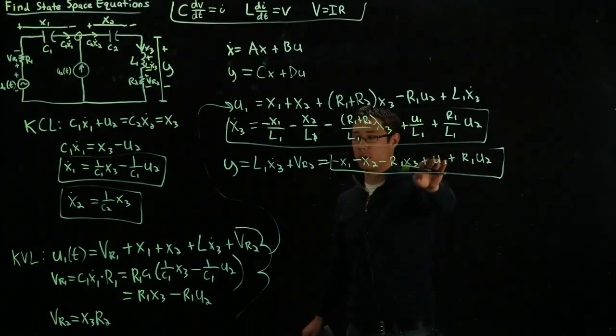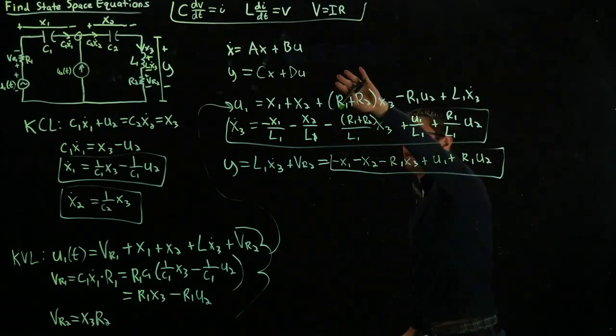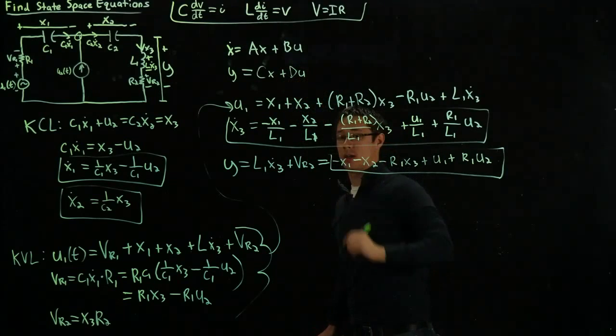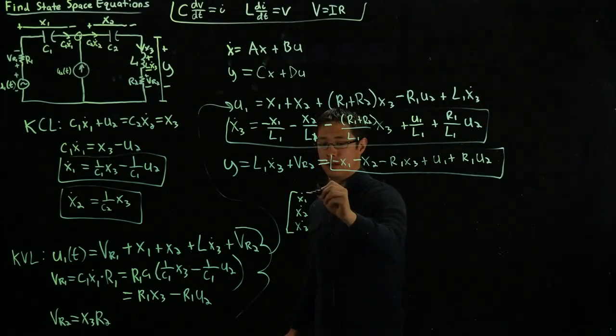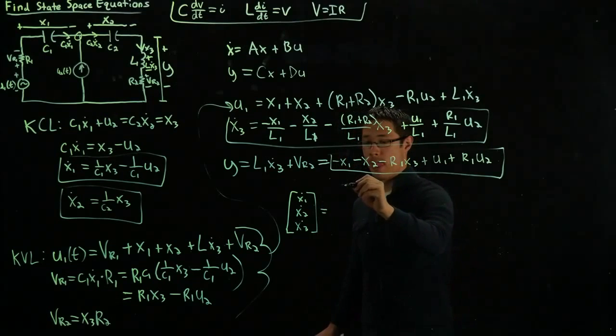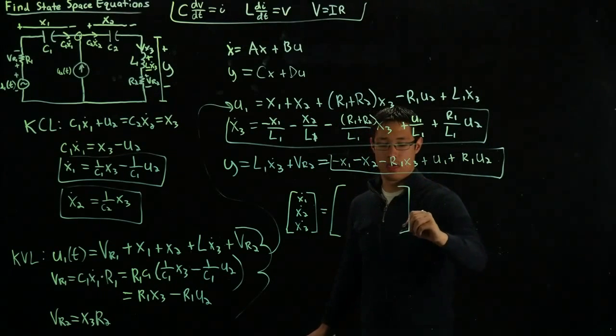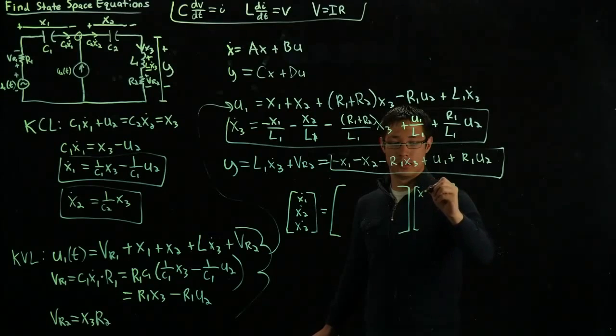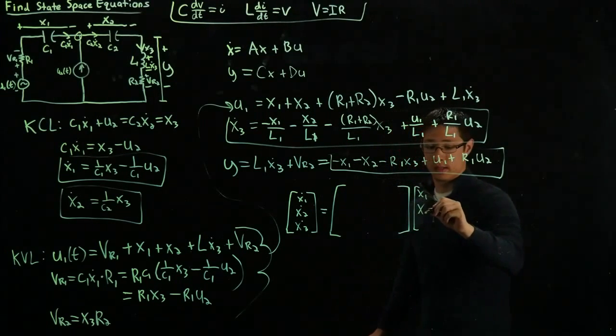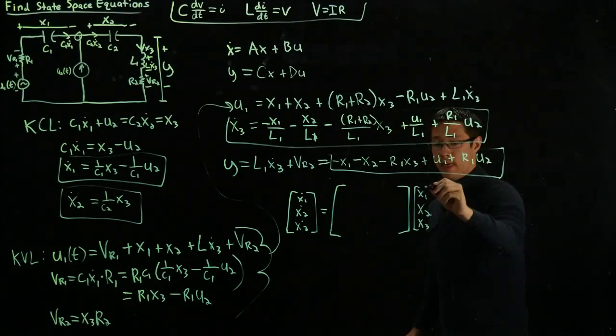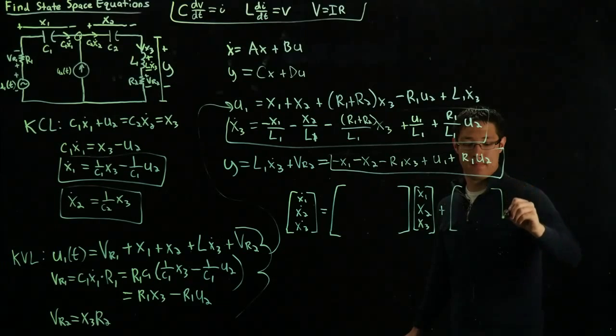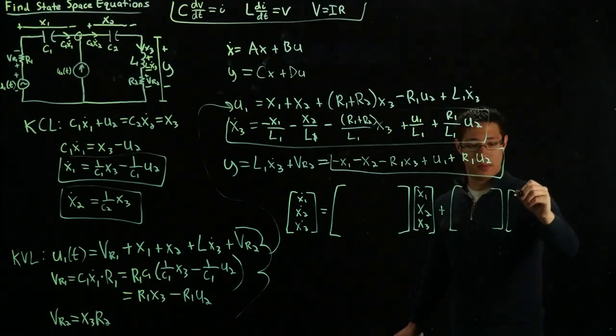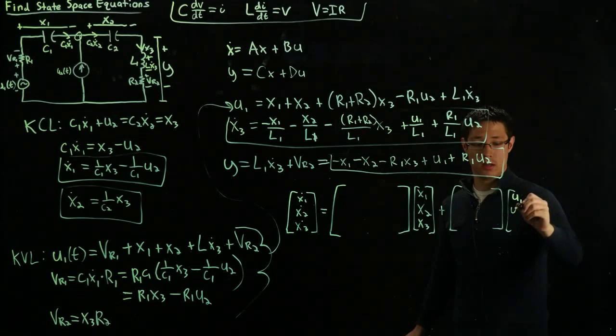So we have our state equations. Now we are ready to write everything in this form here. I'll start with x dot. We know that x dot equals [x1 dot, x2 dot, x3 dot]. This equals our A matrix times our state vector [x1, x2, x3] plus B multiplied with our input vector [U1, U2].